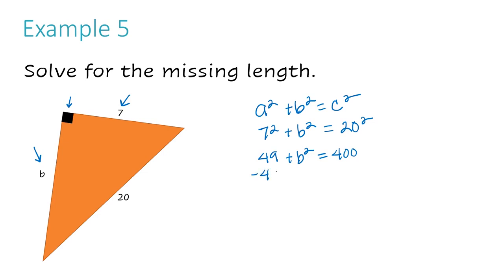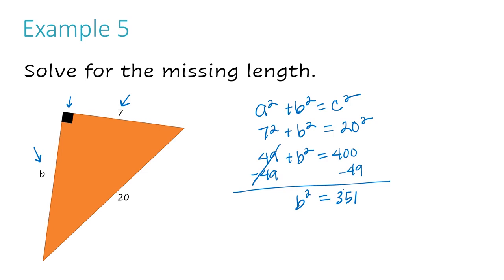Now I'm going to subtract 49 from both sides. I'm left with B squared on the left. The 49 minus 49 equals 0, so it cancels out. Now I have B squared equals 400 minus 49, which is 351. I need to take the square root of both sides to undo the exponent of 2. Taking the square root of both sides, I'm left with B equals the square root of 351.